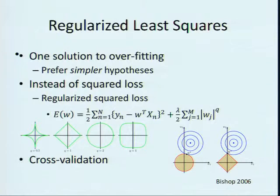The parameter lambda is very important — it controls how much attention you give to the weighting process. You usually find the optimal lambda through cross-validation.